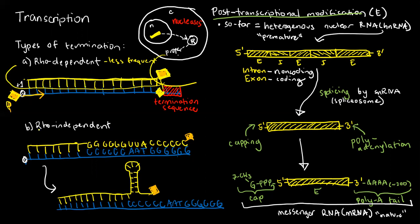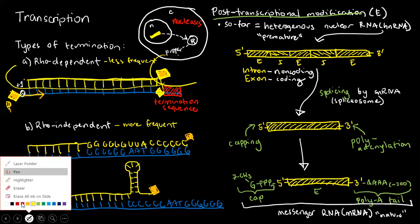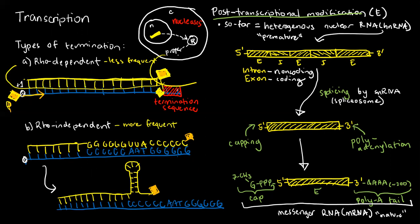In the rho-independent process, which is the more frequent way of terminating transcription, you don't need a termination sequence. Notice there is no red thing right here. But what you do have is this one, which is kind of the substitute for the termination sequence above. This one is actually just an inverted repeat.